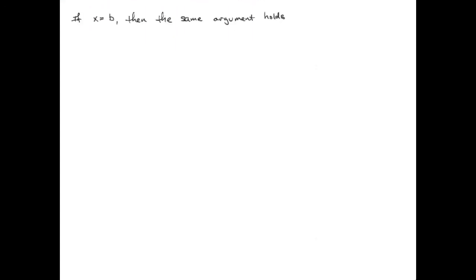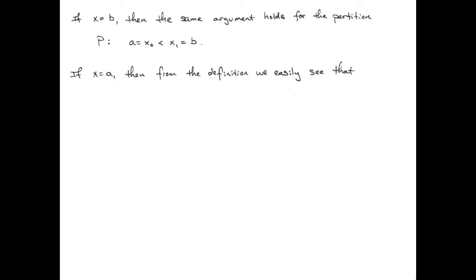If we plug in x = b, essentially the same argument holds using the partition {a, b}. If x = a, we get directly from the definition of variation and the least upper bound that the total variation of f on [a, b] is greater than or equal to zero. That last case follows almost immediately from the definition, and so this completes the proof of the theorem.